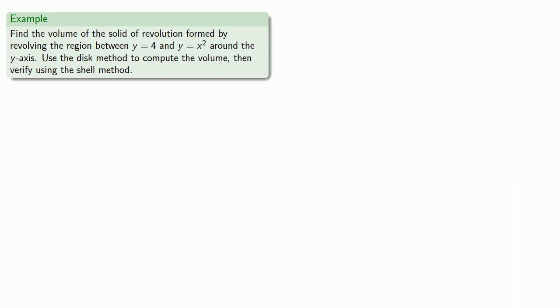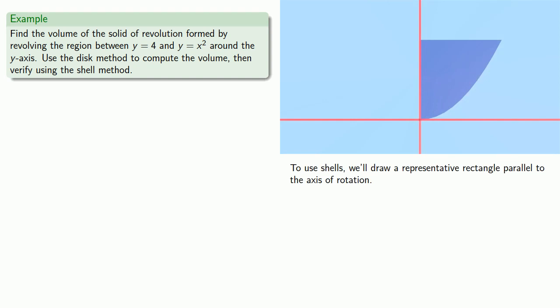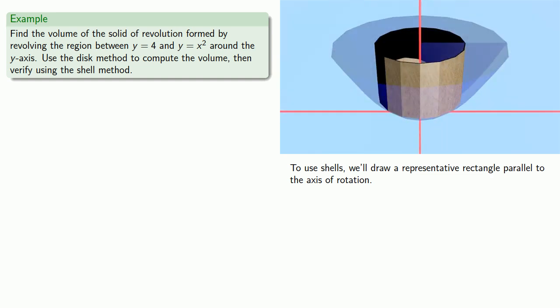To find the volume using walls, I mean to use shells, we'll draw a representative rectangle parallel to the axis of rotation. We're still rotating everything around the y-axis, and that produces a wall, I mean shell, where the volume is the length times the height times the thickness.